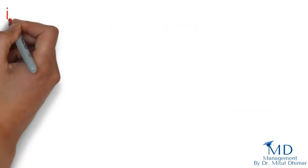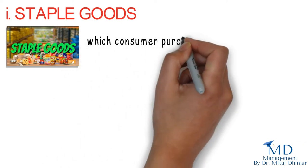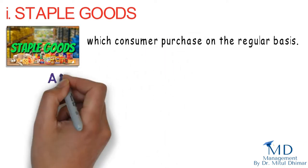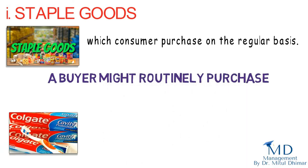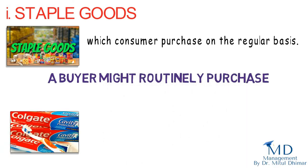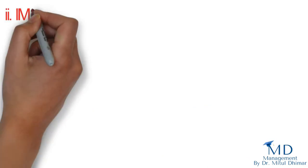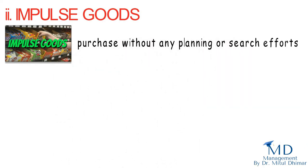Number one: staple goods. Staple goods are those which consumers purchase on a regular basis. A buyer might routinely purchase Colgate toothpaste, Dove soap, and Parle-G biscuits. Number two: impulse goods. Impulse goods are purchased without any planning or search efforts, for example chocolates and potato chips.